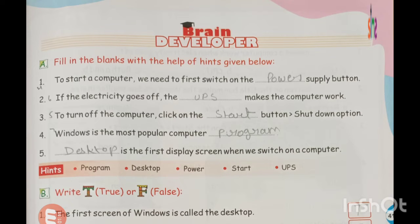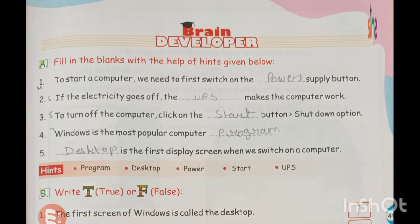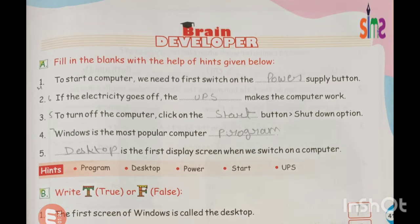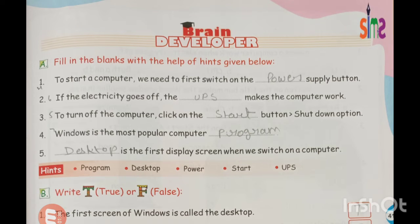Second: if the electricity goes off, the dash makes the computer work. When the electricity goes off, which device helps the computer keep working? The answer is UPS. We will fill in the blank with UPS.